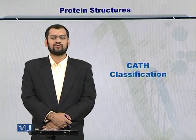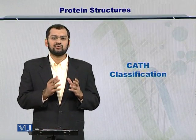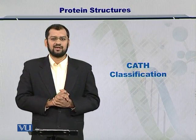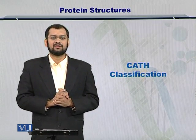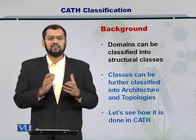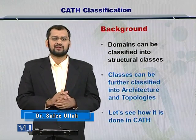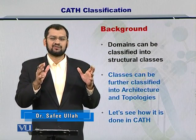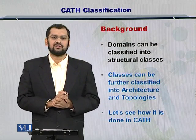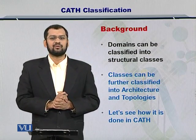We know that there are multiple types of domains that exist within proteins. In this module, I am going to show you how to organize different proteins with these different domains into a specific scheme. That scheme is called the CATH classification. Domains can be classified into classes, and those classes can be organized further into architectures, then topologies, and then homology. This is how the organization looks in CATH, and we will see in detail how it looks in terms of proteins.